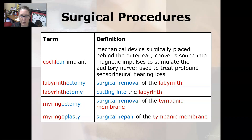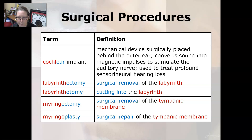Now some surgical procedures. A cochlear implant is a mechanical device surgically placed behind the outer ear. It converts sounds into magnetic impulses to stimulate the auditory nerve, and is used to treat profound sensorineural hearing loss.